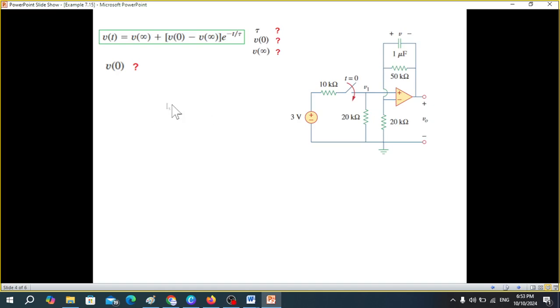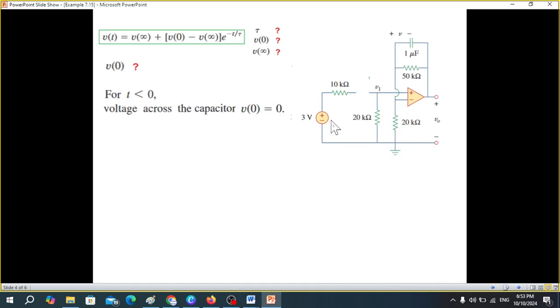So first of all, let's find V(0), and for that the switch is open. So this voltage will not go ahead, not pass or not influence this circuit, that means there will be no current flowing through the capacitor, so the capacitor voltage will be 0. So we can write that the capacitor voltage at 0 is 0.